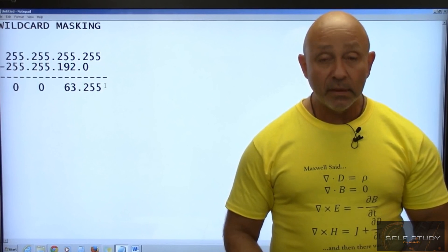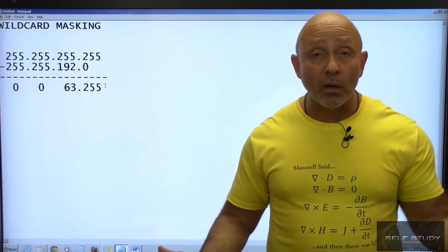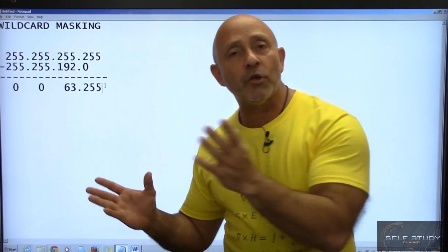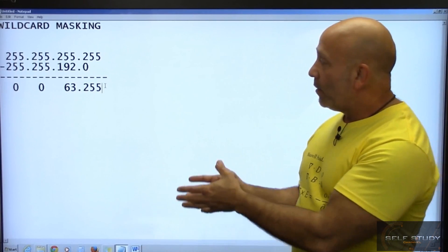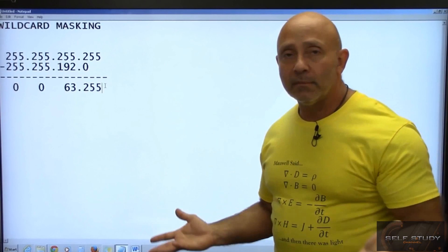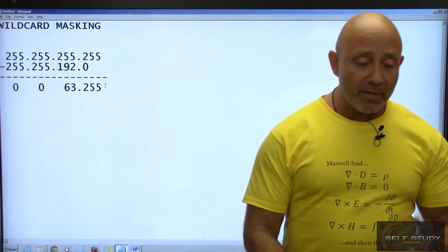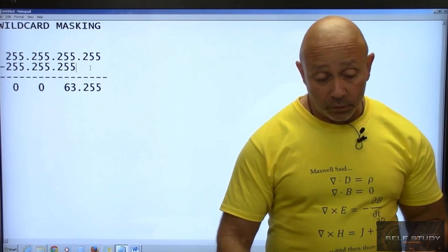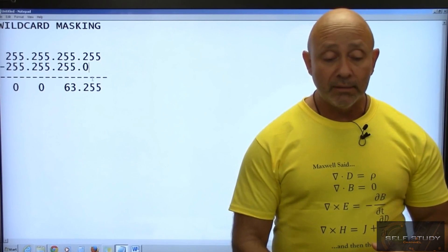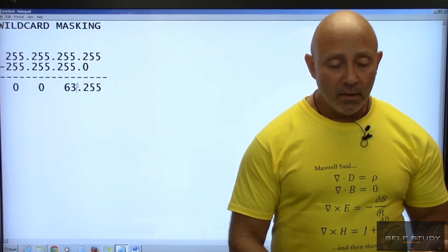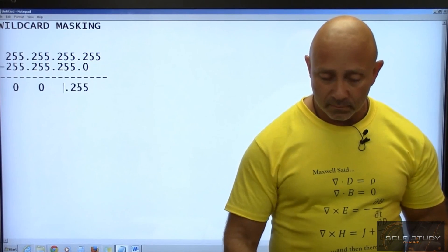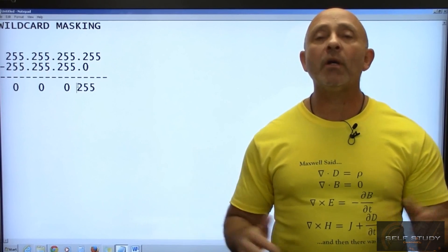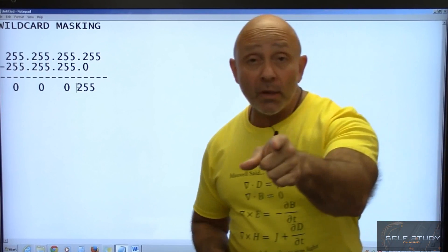So 0.0.63.255, there is your wildcard mask. It doesn't matter what octet you're in, you have a constant number and then you subtract from your mask that you're using. That's it. If you were to have the mask that we normally are very accustomed to, the /24 mask, well then there you go, that's it right there.